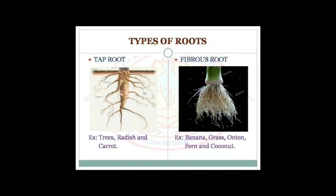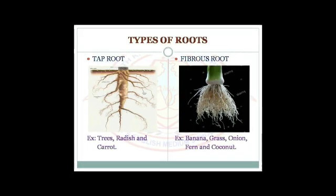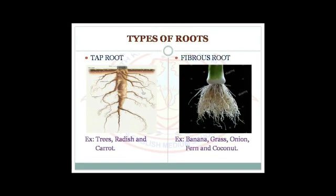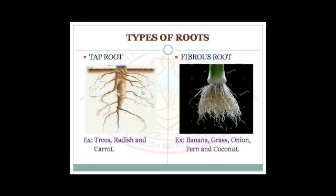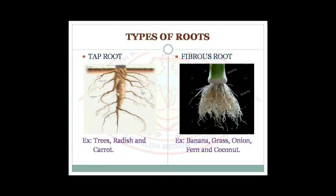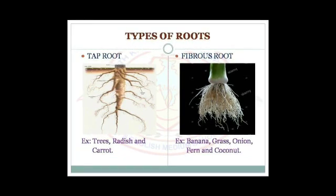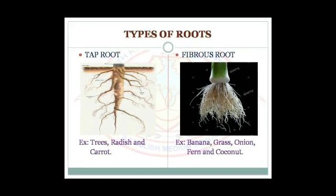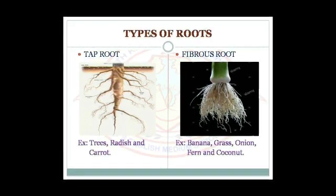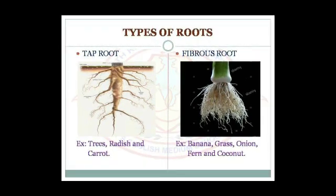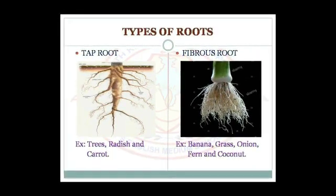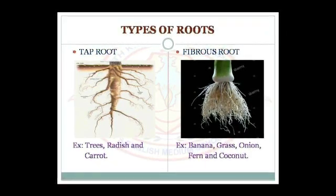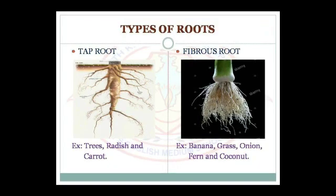Tap roots have a main or central root on which smaller, thinner roots arise laterally. Go through the first figure which depicts tap root. Most trees and vegetables like radish and carrot have tap roots.